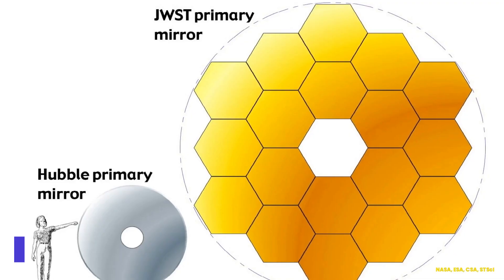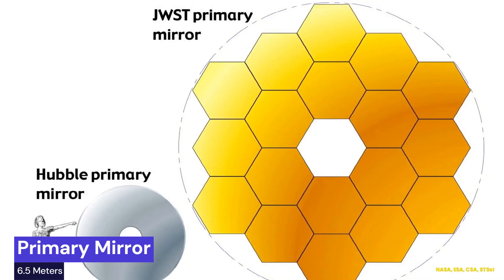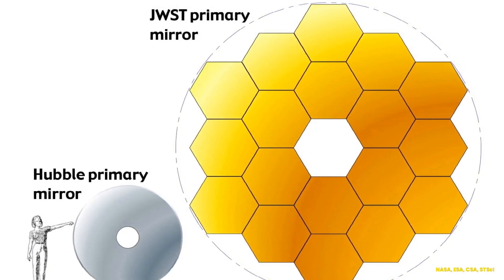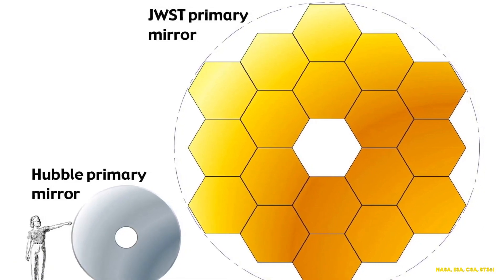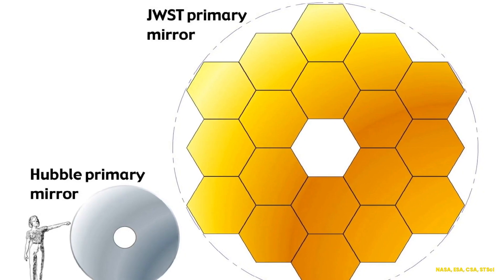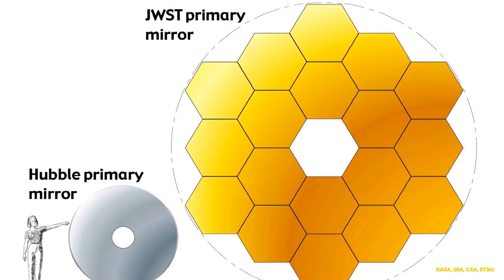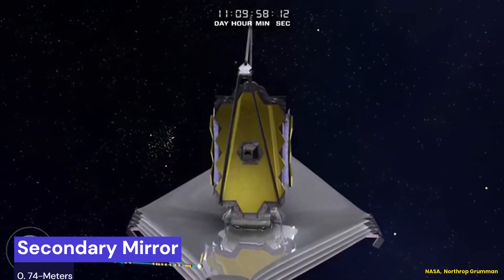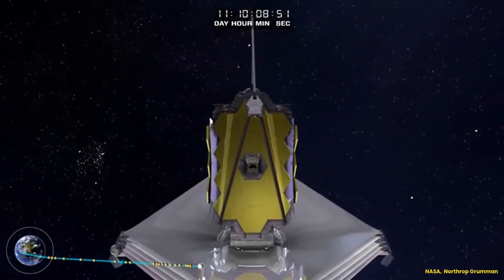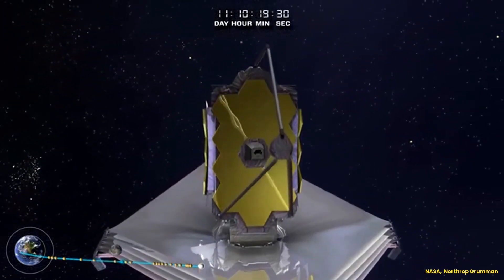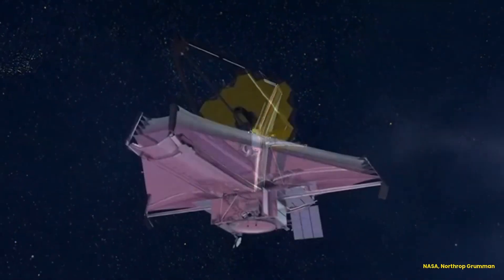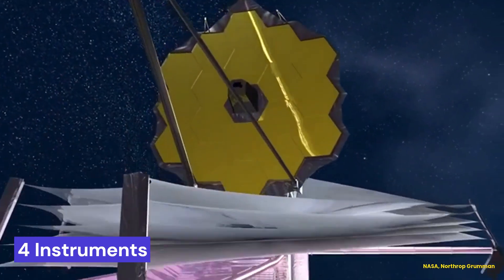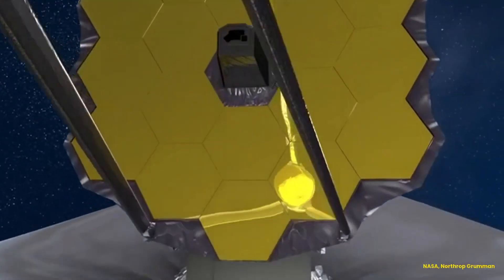The telescope's primary mirror is over 6.5 meters wide, giving it over six times the collecting area of Hubble. It consists of 18 hexagonal gold-coated beryllium segments adjusted by precision actuators. The secondary mirror and instruments sit directly in the central optical path. This folded design was required to fit inside the launch vehicle. The telescope carries four instruments selected competitively by the science community to maximize infrared observation capabilities.